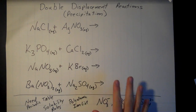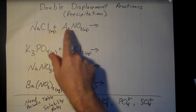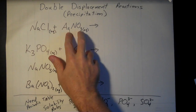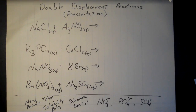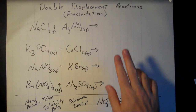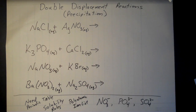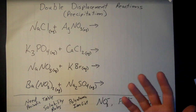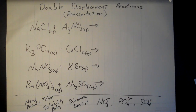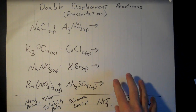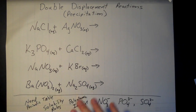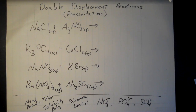For double displacement reactions, you'll identify them by starting with two compound substances, like NaCl and AgNO₃. They're both ionic compounds, and you're going to make two ionic compounds as a result. We're predicting what the products are and whether the reaction will happen. One of the products will be a precipitate if a reaction takes place. If both products are aqueous, there's no reaction.